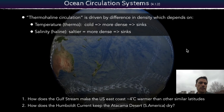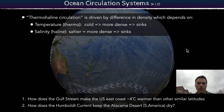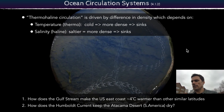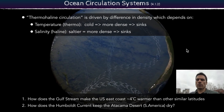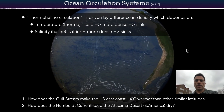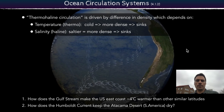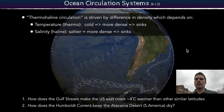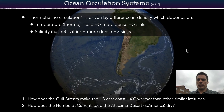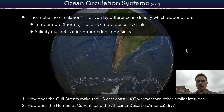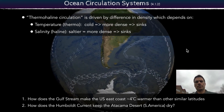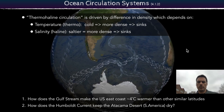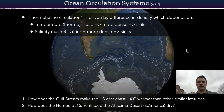Another thing to consider would be the Humboldt Current and the Atacama Desert — how those play a role in affecting the climate. That's a whole other dynamic we can look at, all thanks to ocean circulation. I'll spend a lot more time on this in future classes, but I hope that covers thermohaline circulation briefly. Thanks, talk to you later.